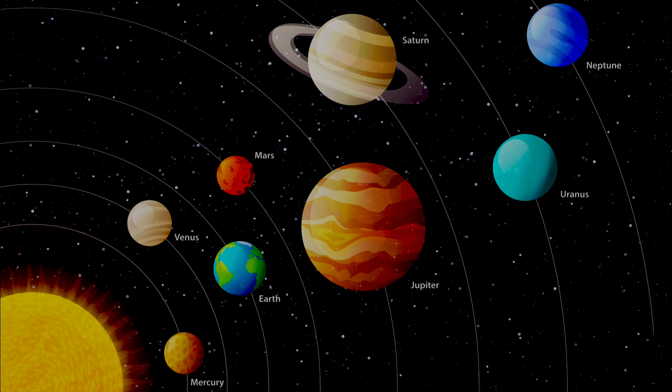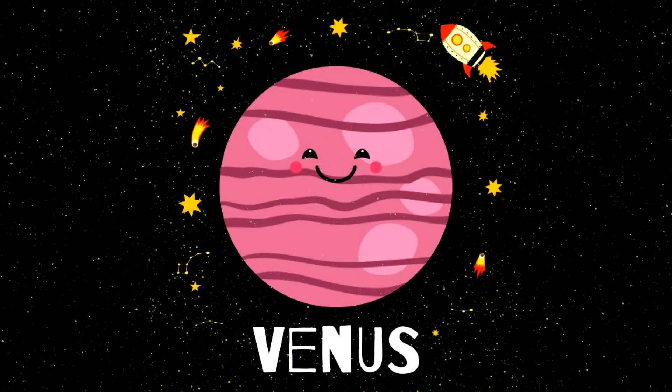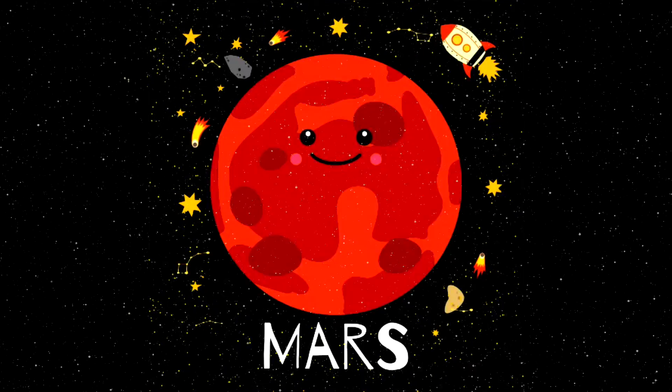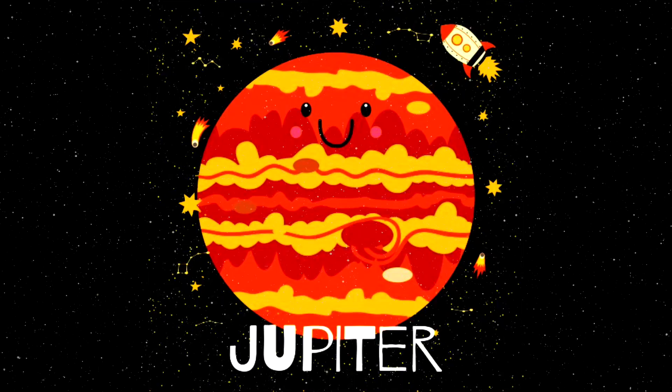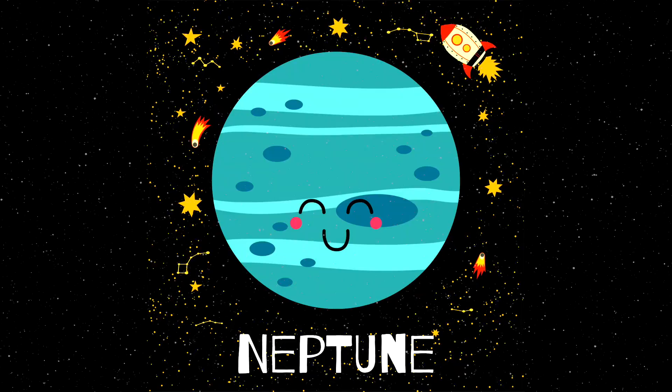Get to eight and then we're done. Mercury and Venus, Earth and then Mars. Jupiter and Saturn, Uranus and last is Neptune.